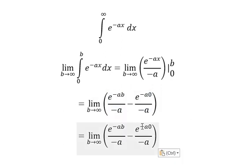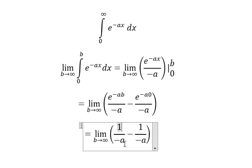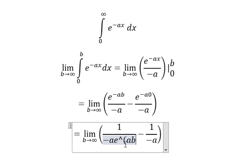So e to the power of 0 equals 1. And now in this one, b approaches positive infinity, so in this case we have 1 over negative a times e to the power of ab.